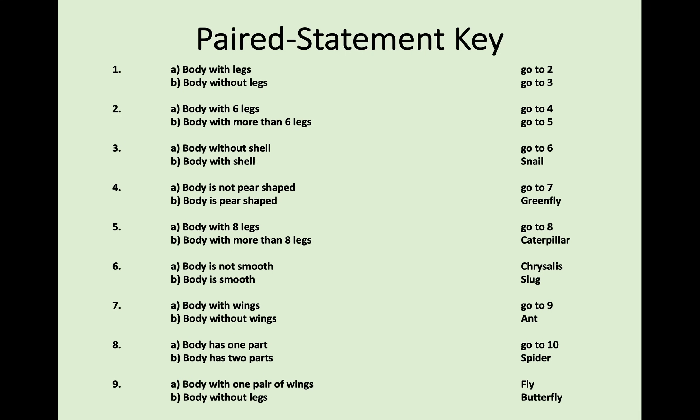The other form is the paired statement key, which comes up very often as well. It works the same way as a branching key but instead of a branching structure, you answer a question and are directed to the next question in sequence. For example, with a fly, you'd choose between 'body with legs' or 'body without legs,' then move on to your next question until you identify the organism.